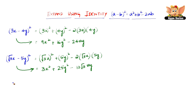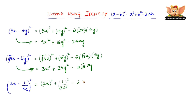Now let us consider another one which is (2x - 1/3x)². It is a fraction here, so that doesn't change anything about the way we use the formula (a - b)², because here a is 2x and b is 1/3x. So we have (2x)² + (1/3x)² - 2 × 2x × 1/3x. So (2x)² is 4x², plus (1/3x)² is 1/9x².